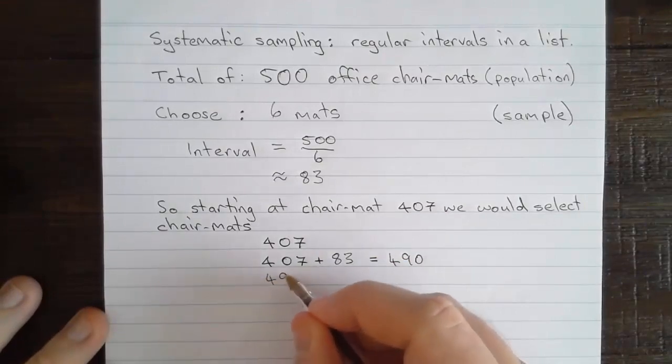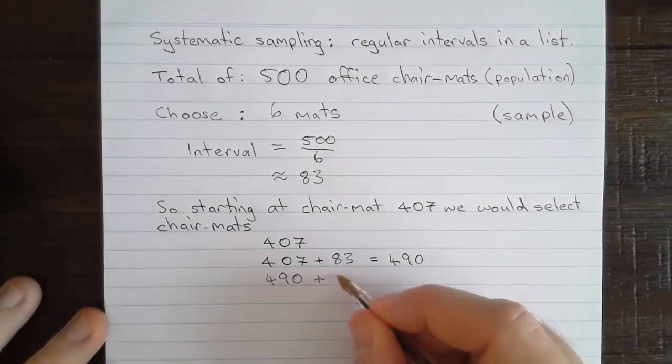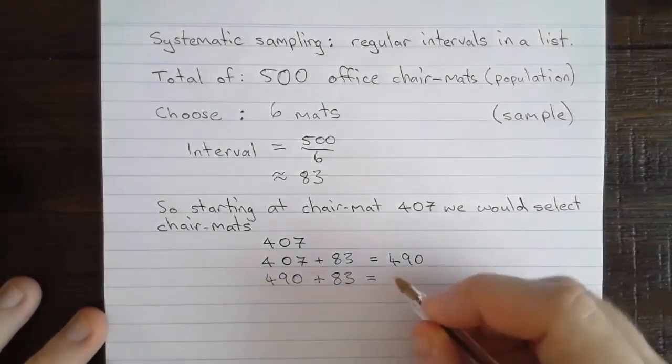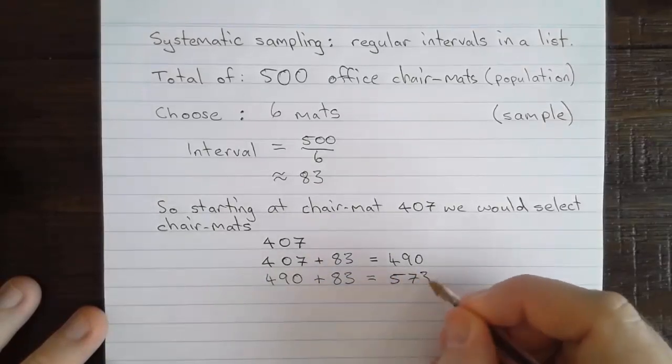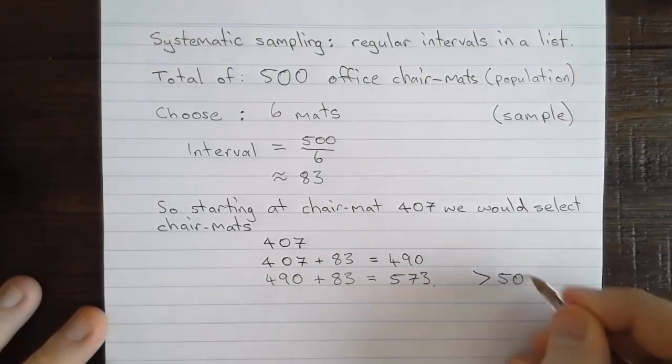Then, again, the regular interval of 83. 490 plus 83 is equal to 573. Now the problem here is that that's greater than 500. That's greater than the population that we have.